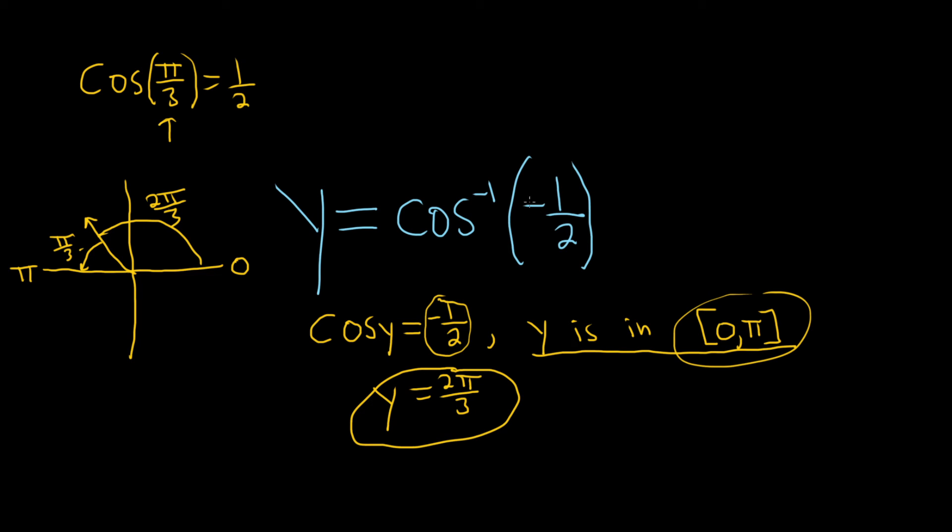The cosine inverse takes negative 1 half and sends it to y. That means the cosine function takes y and sends it back to negative 1 half. Then you specify the range of inverse cosine purely from memory, just totally worth memorizing.